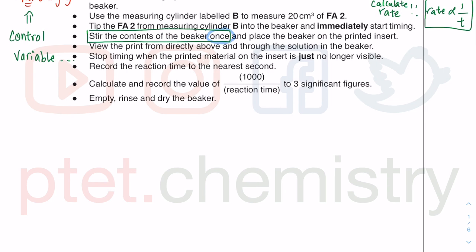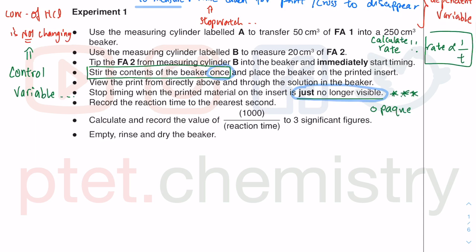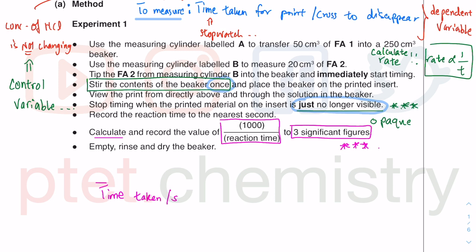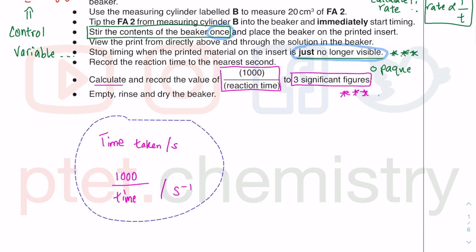You stop timing when the printed material is just no longer visible. The question says 'just no longer visible' — it becomes opaque, meaning you cannot see through anymore. Even though rate is inversely proportional to time, the question wants you to calculate the value of 1000 over reaction time to three significant figures. If you don't follow the instruction, you are not going to get any marks at all. What you get is the time taken in seconds, and then you have 1000 over the reaction time in s⁻¹, and you should record your result very carefully.